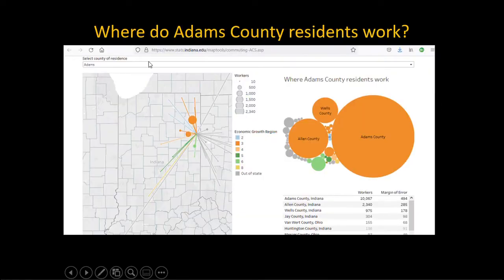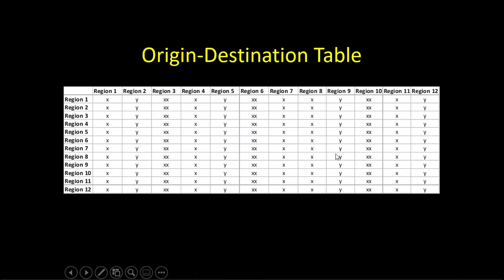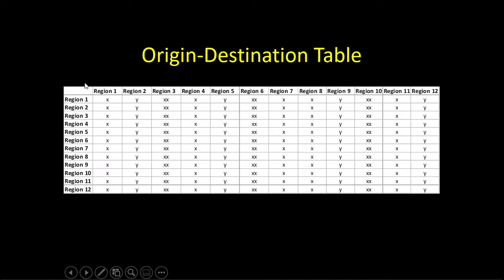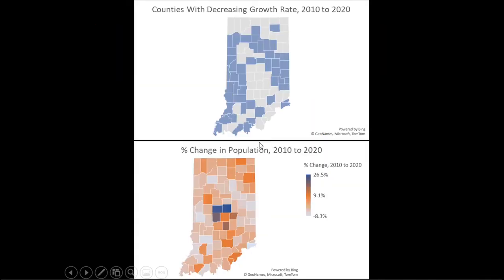Here's a visualization from stats.indiana.edu: where do Adams County residents work? It's essentially just a table — Adams County as the origin, then showing where they work. This is a proportional symbol map. Most people in Adams County live and work there, but nearby Allen County is also a source of many workers, which makes sense given it's a big city. All of this map is based on an attribute table.